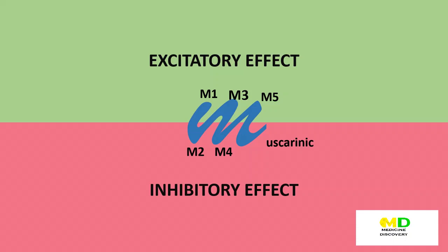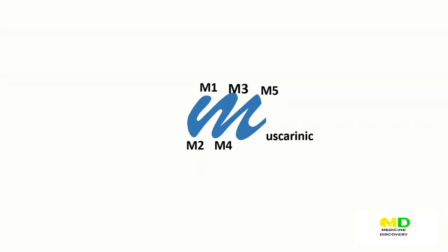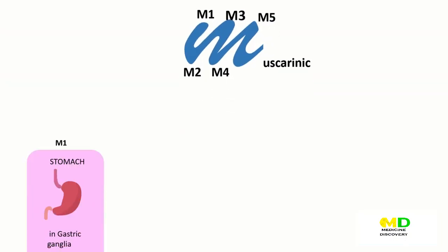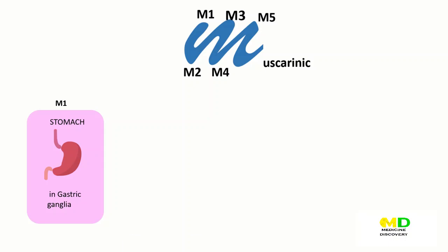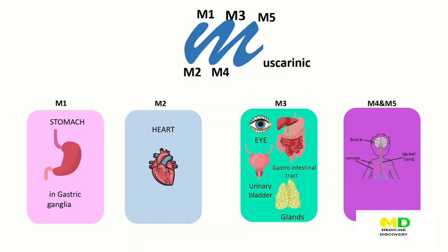M1 muscarinic receptor is located in the stomach in the gastric ganglia. M2 is located in the heart. M3 is located in the eye, gastrointestinal tract, urinary bladder, and glands. M4 and M5 are mainly located in the central nervous system. And that is for muscarinic receptors.